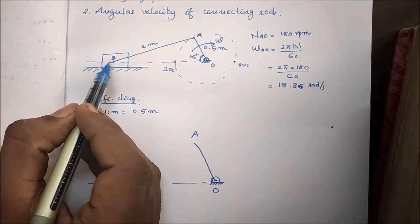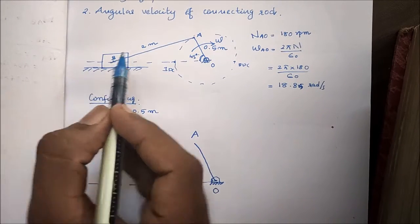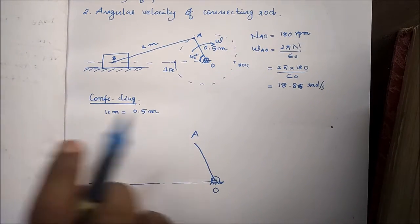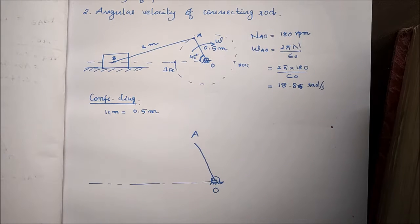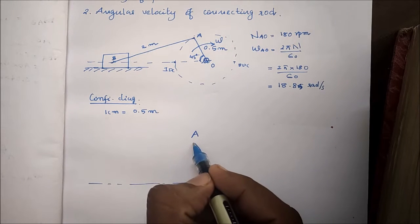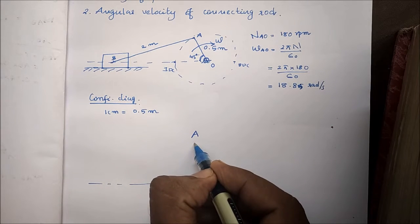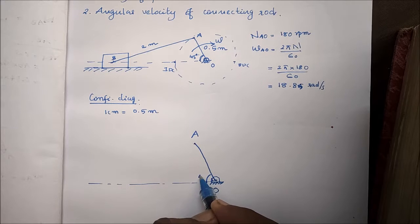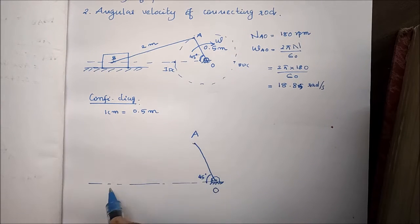What is the distance between A and B? It is 2 meters, which equals 4 centimeters on the diagram. I am marking this at the 45-degree angle.